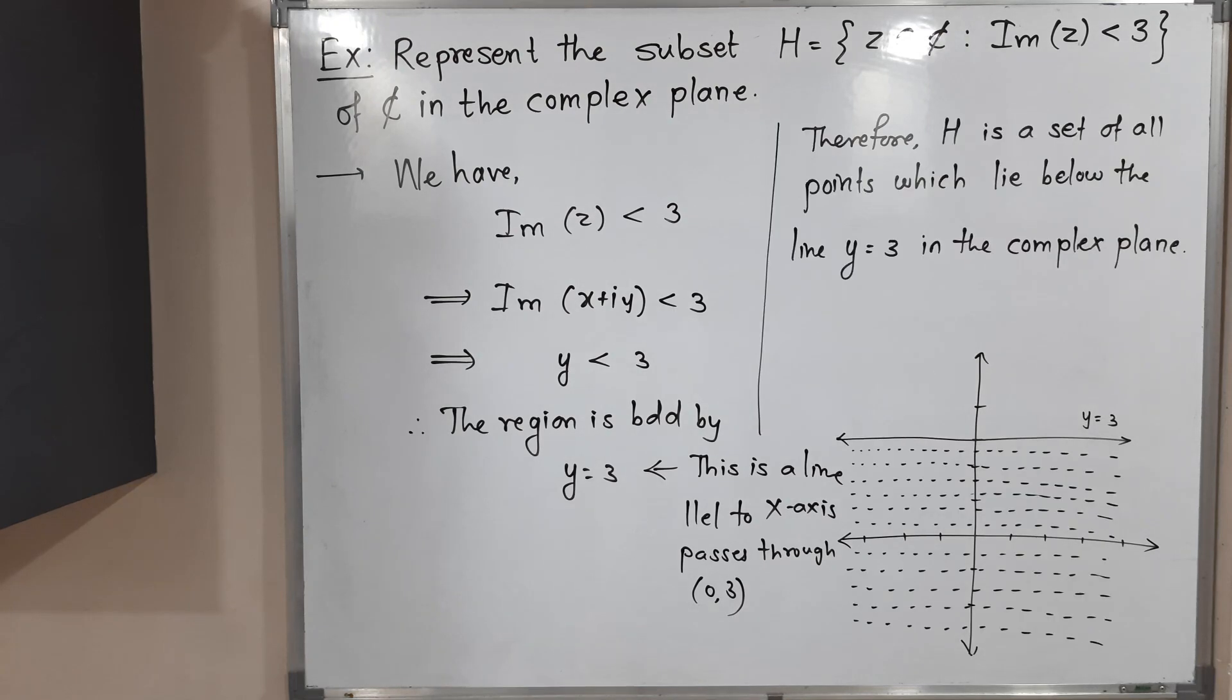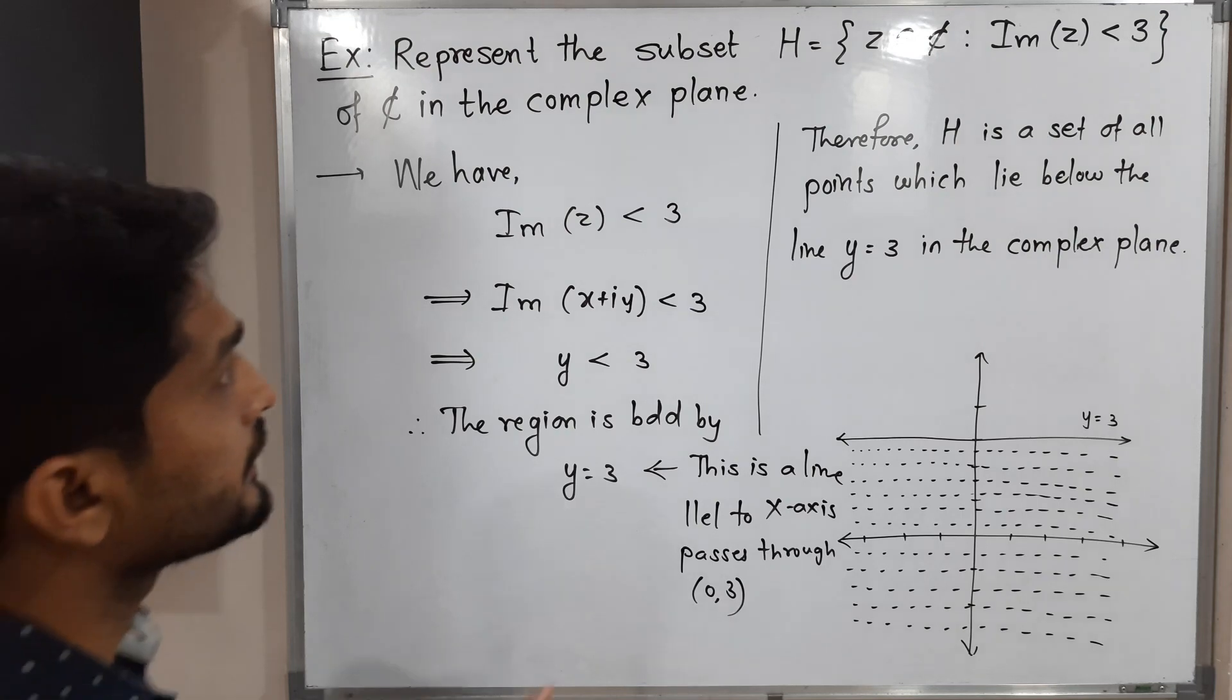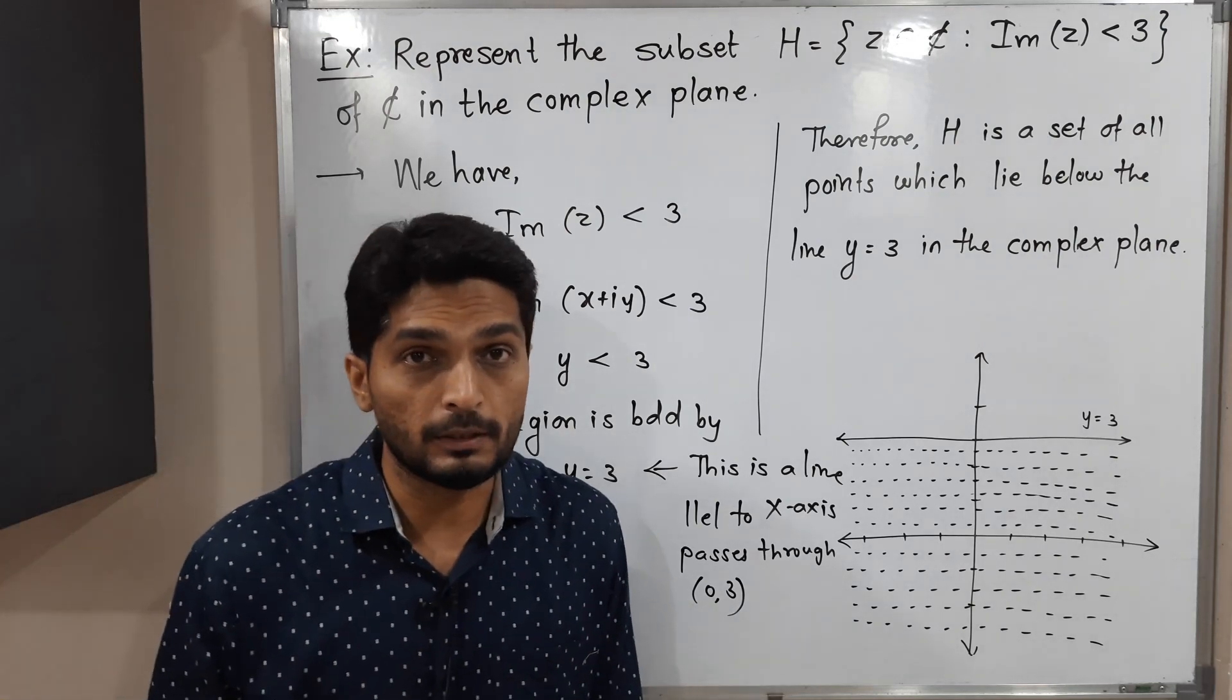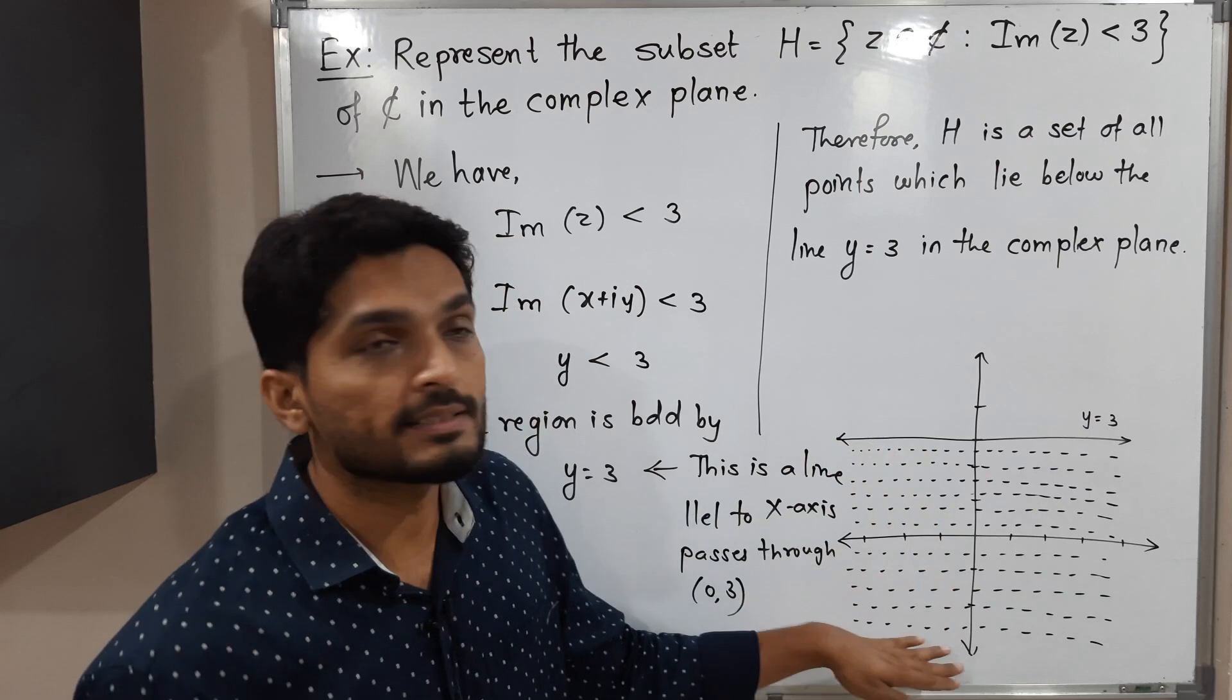So I have shown in this diagram. H, the given set H, is the set of all complex numbers which lie below this line y equals 3.